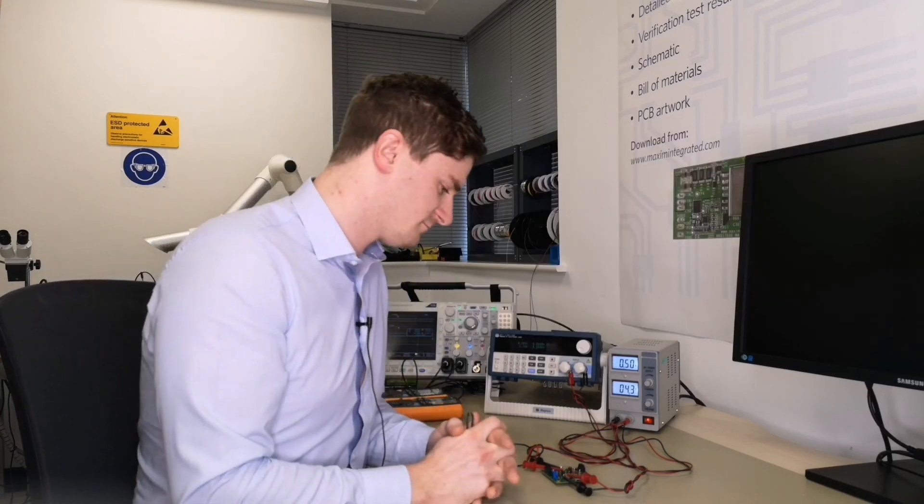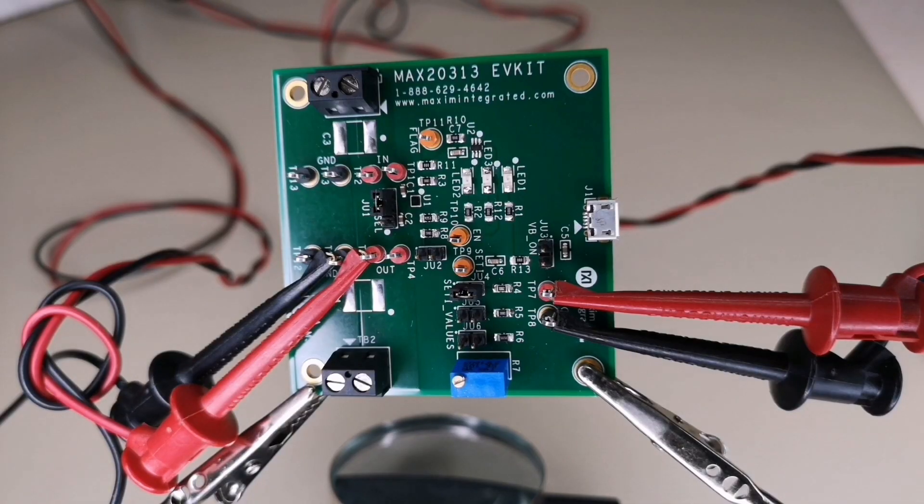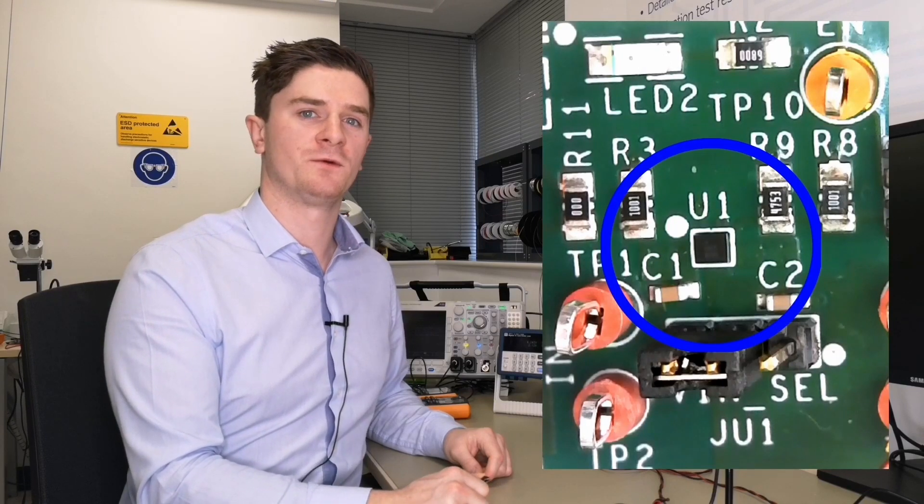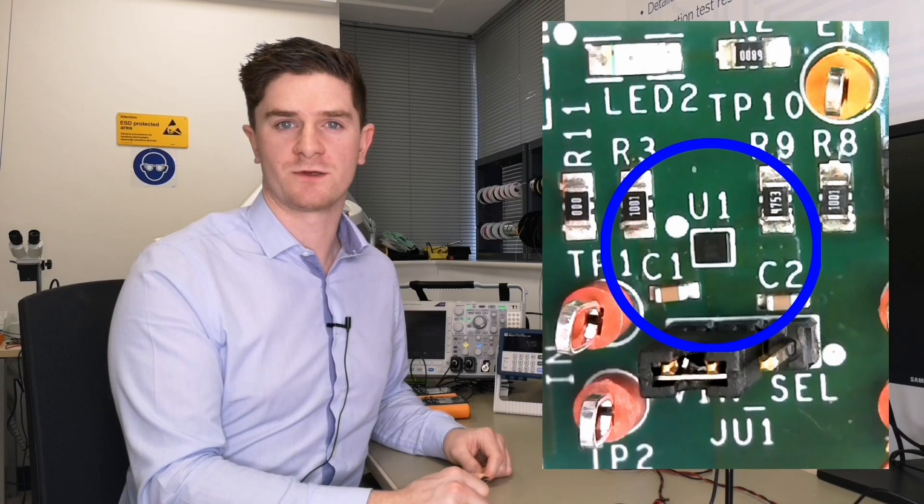Let's see it in action. Here we have our MAX2313 EV kit which contains all the circuitry we need to demonstrate its performance. This tiny little IC is the MAX2313 perfect for space constrained applications.